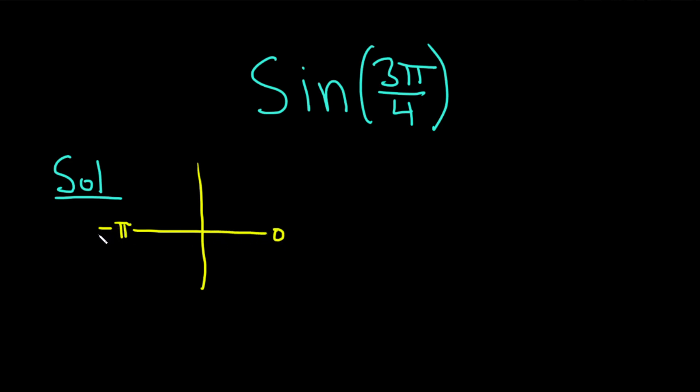And you can think of pi as a number over 4, so 4 pi over 4. And that can help you determine where 3 pi over 4 is. It's going to be here.